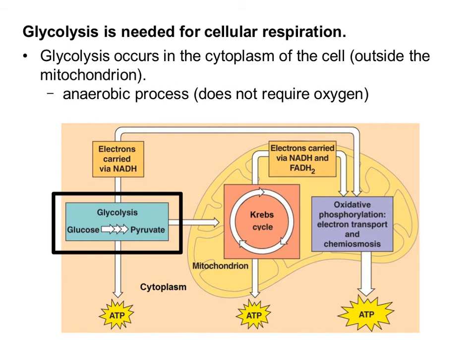The process of glycolysis occurs in the cytoplasm of the cell, so it's outside the mitochondria. This is an anaerobic process because it does not require oxygen.